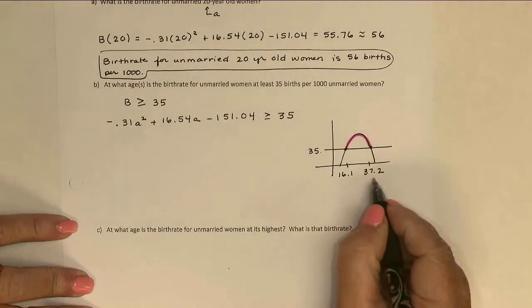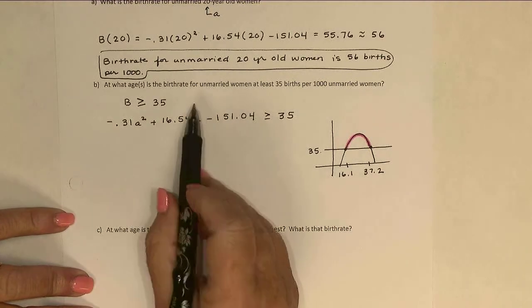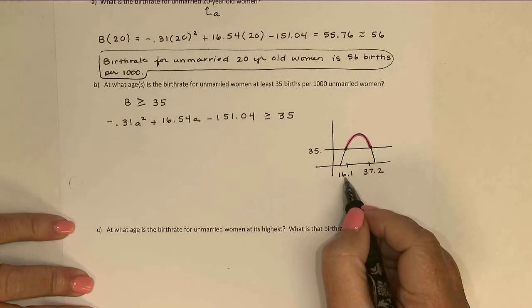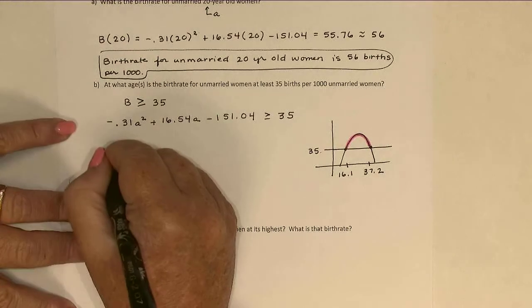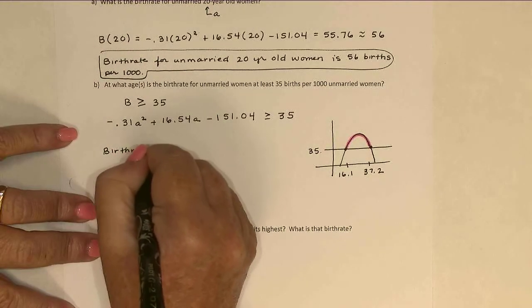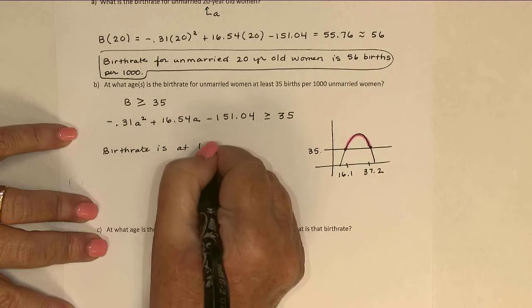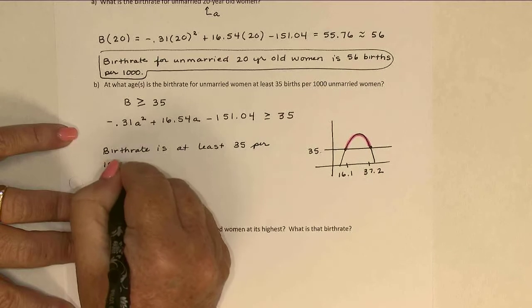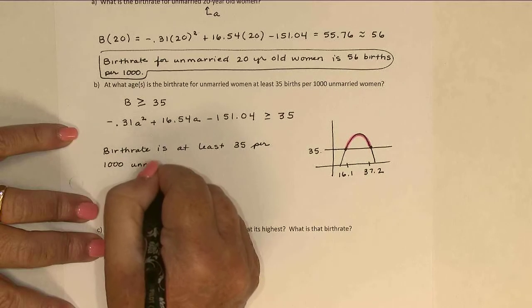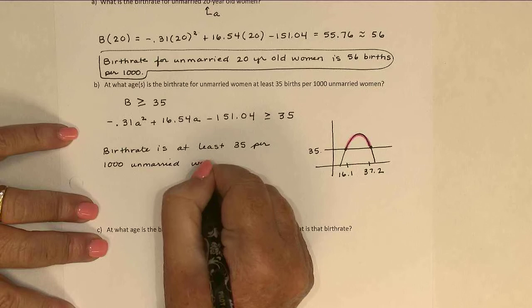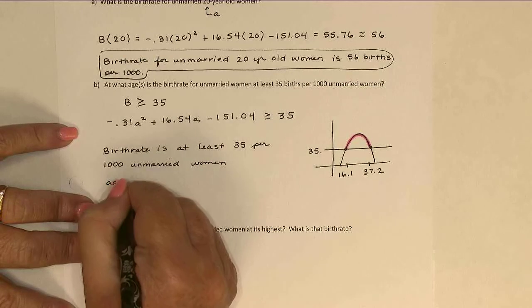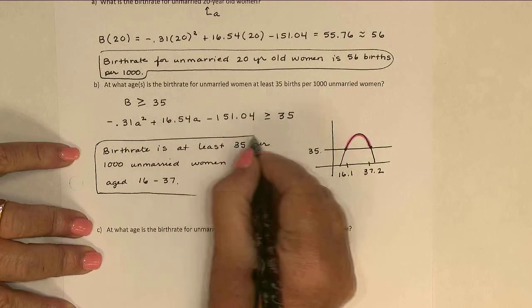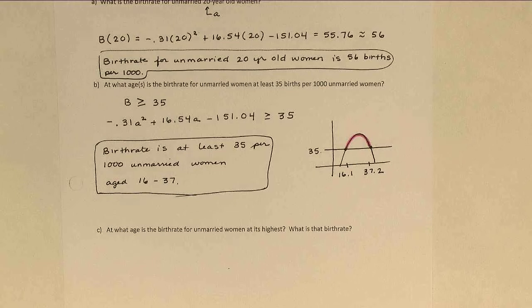So if we're talking ages, I'm going to round off to the nearest year. We're going to say birth rate for unmarried women is at least 35 births per thousand from age 16 to 37. And there's my sentence again, one could stand on its own, even if someone hadn't read the rest of the problem.